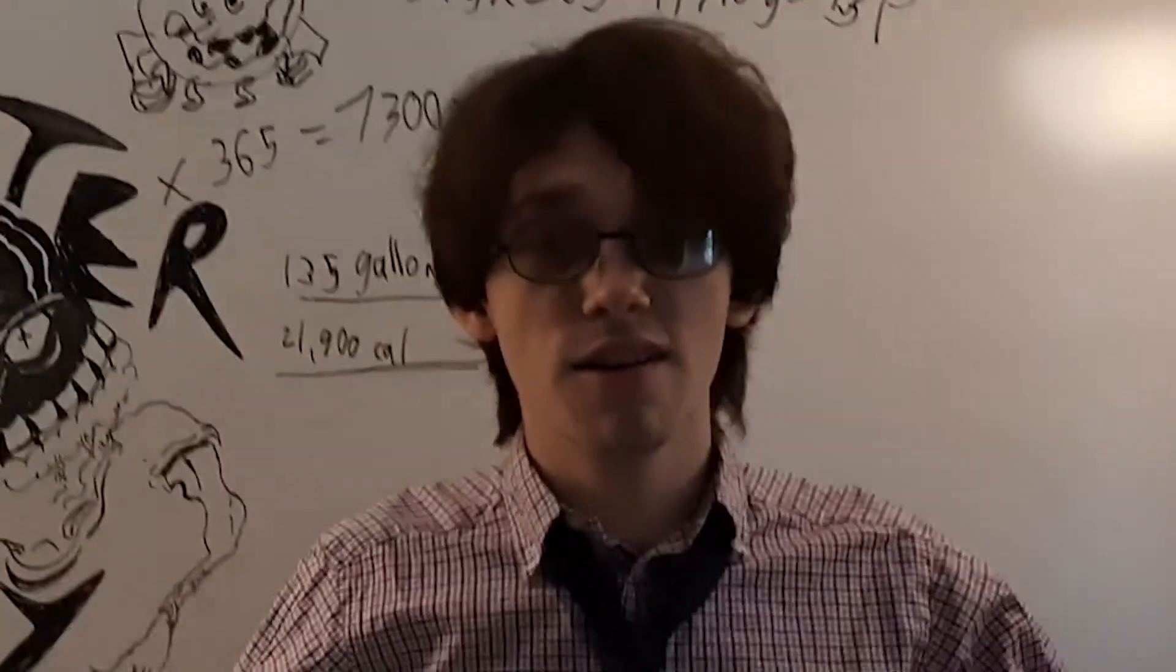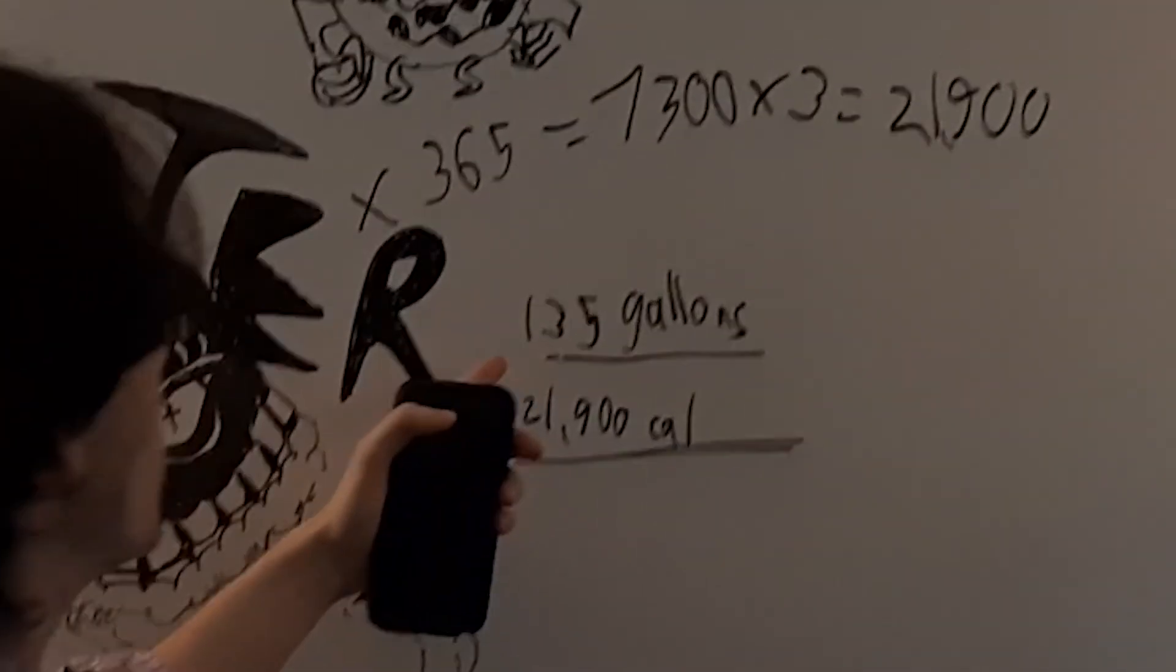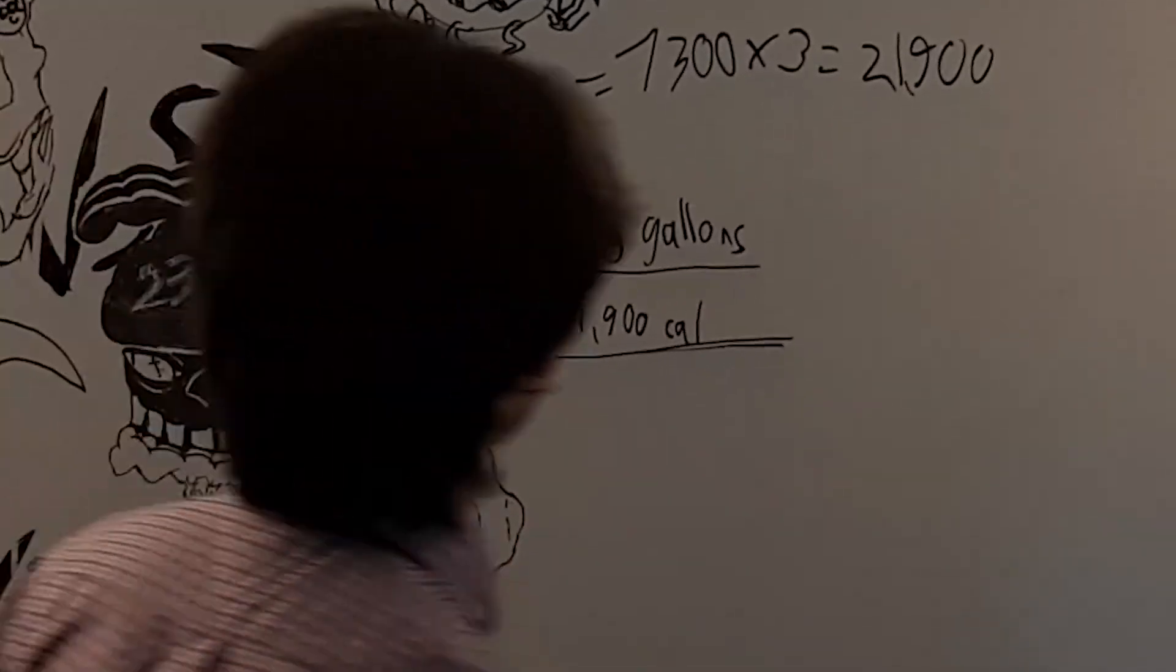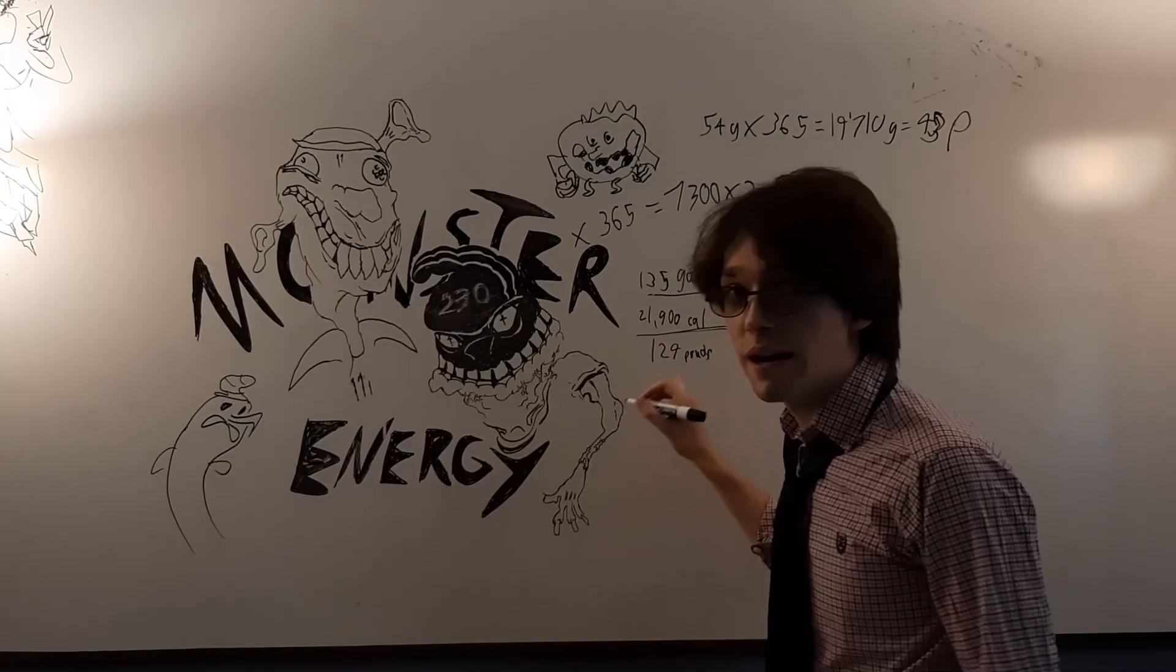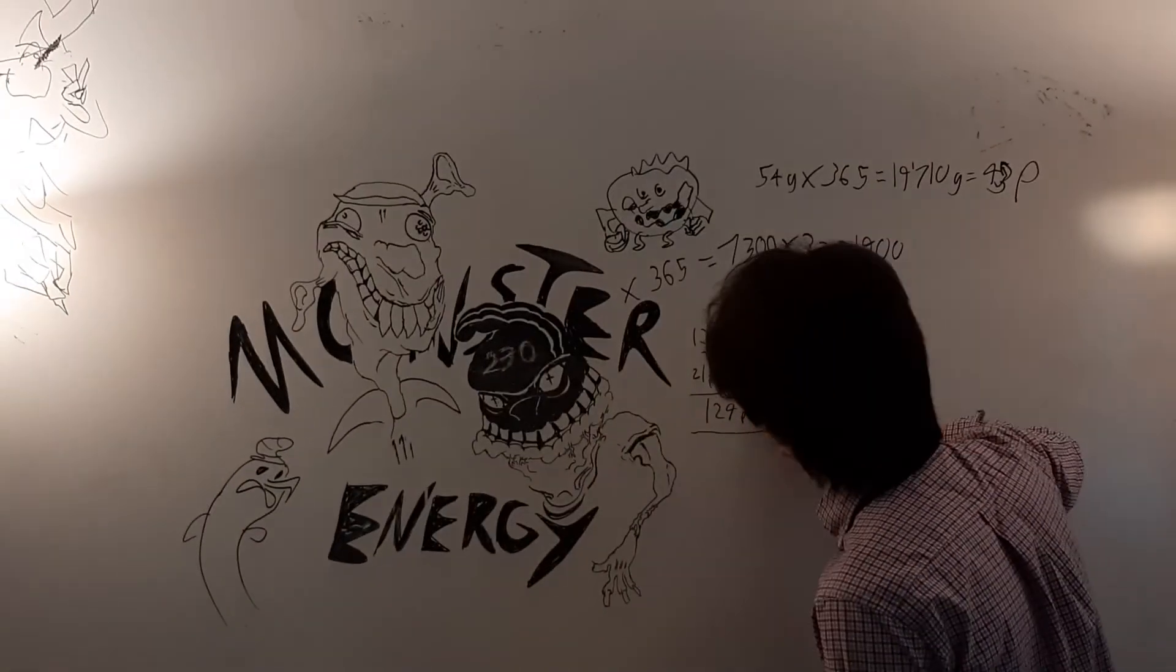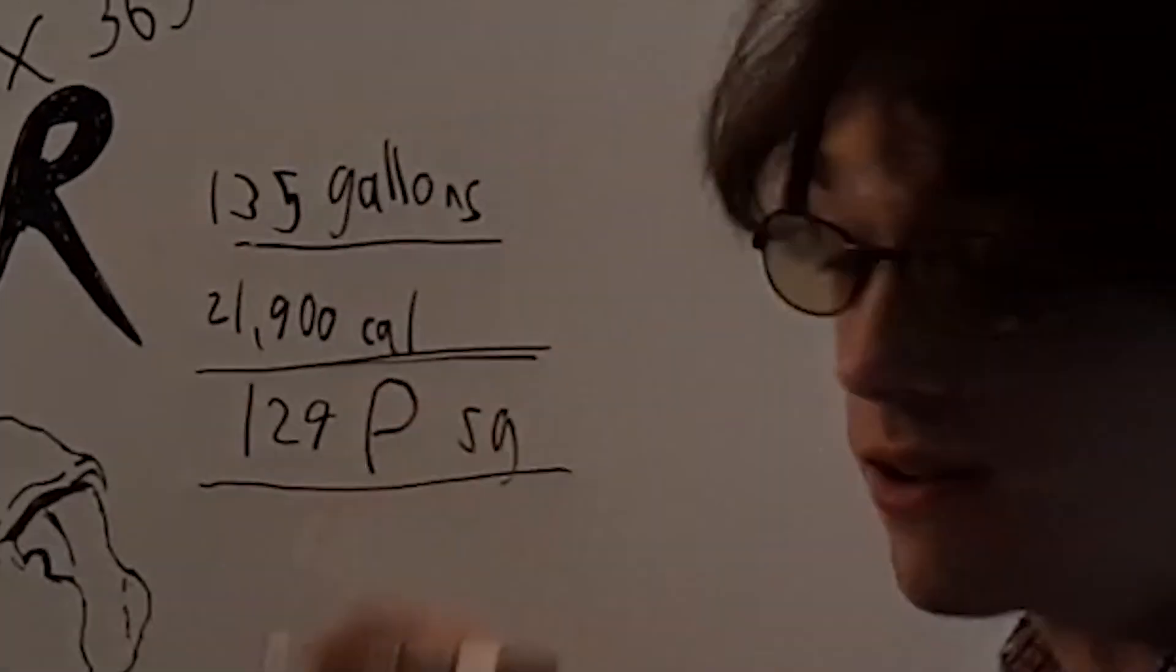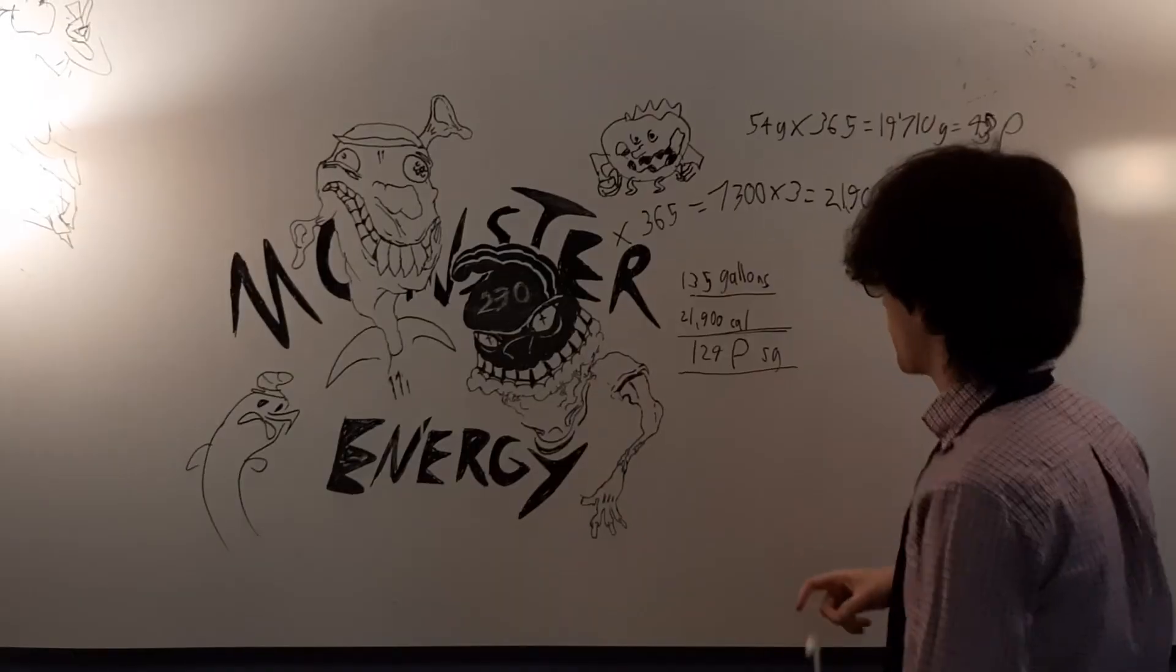A little bit of easy math, boys. 43 times 3, that is 129 pounds of sugar. I forgot the N in the pounds, so it says pounds. 129 pounds of sugar. That's a lot of pounds of sugar. Overall, it looks like I'm gonna die.